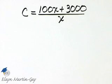Make sure you understand what this equation stands for. C is manufacturing cost per desk in dollars and X is the number of desks manufactured.